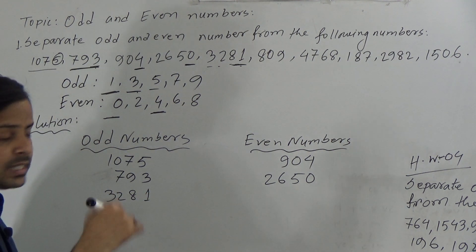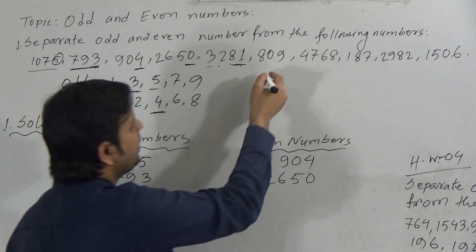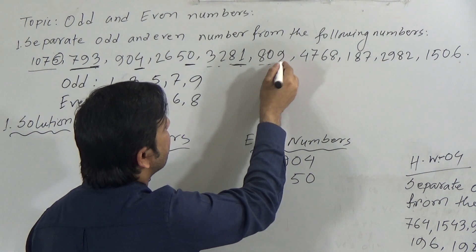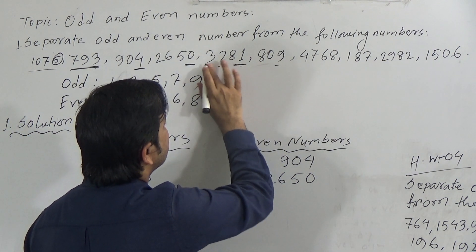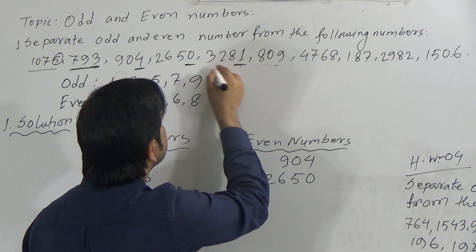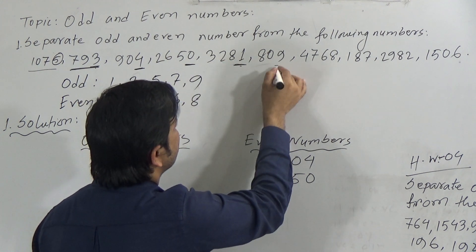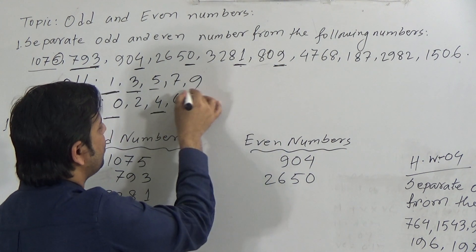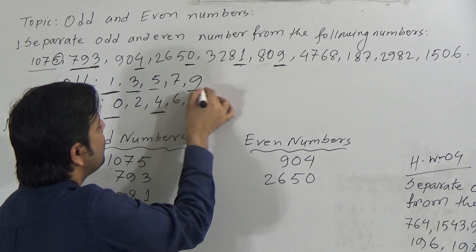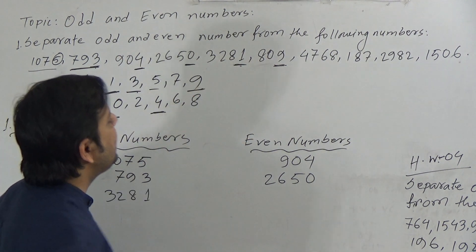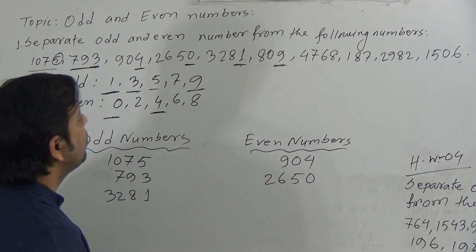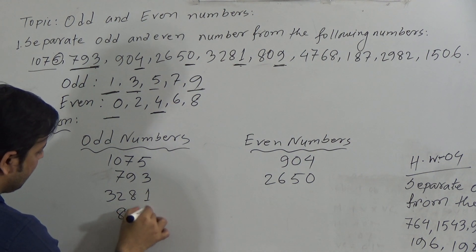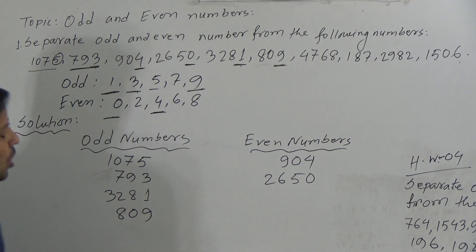Then go to the next number. The next number is 809. Here the unit place is 9. Since 9 is odd, the number 809 is odd.